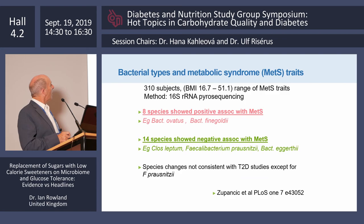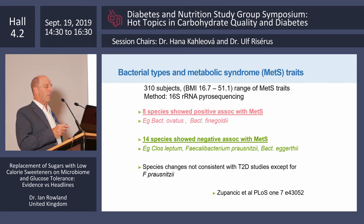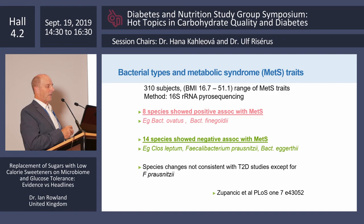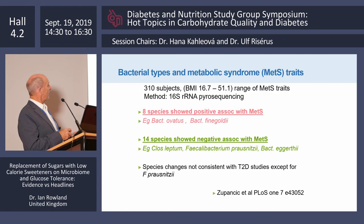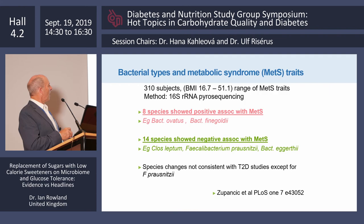Looking at metabolic syndrome, one study comparing people with a range of metabolic syndrome traits found eight species positively associated with metabolic syndrome, including two species of Bacteroides. Several species showed a negative association with metabolic syndrome — high levels of Clostridium leptum, Faecalibacterium prausnitzii, and a Bacteroides species were associated with low risk. However, these species changes were not consistent with those seen in type 2 diabetes studies, apart from the effects on F. prausnitzii.